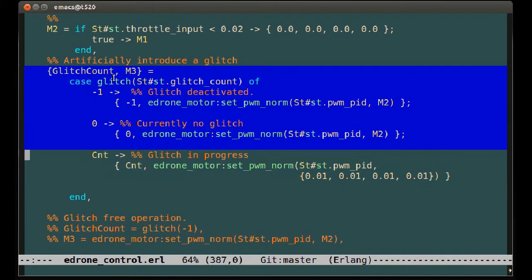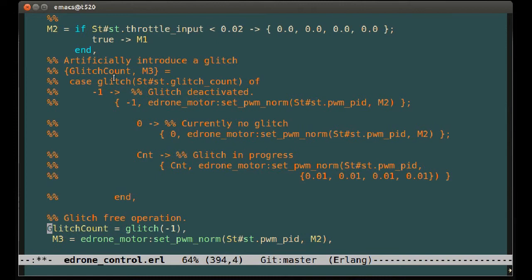We can fix this quite easily by simply commenting out the code, and then bring in the correct code, which is down here. This line deactivates the glitch completely, and this line sets the motor speeds for all four motors to the correct value, which is stored as a tuple in M2.